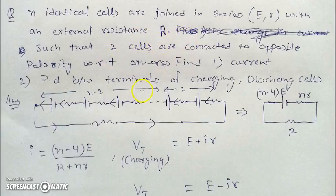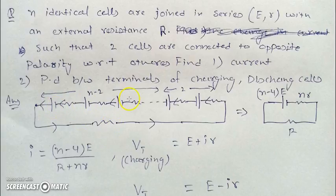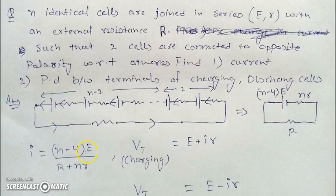In another question, n identical cells are connected with an external resistance such that two cells are opposite to the remaining (n−2) cells. Since n is much greater than 4, the equivalent EMF is (n−4)E — the two opposing cells cancel two more — and the equivalent resistance is nr + R. The current in the circuit is therefore (n−4)E / (nr + R).